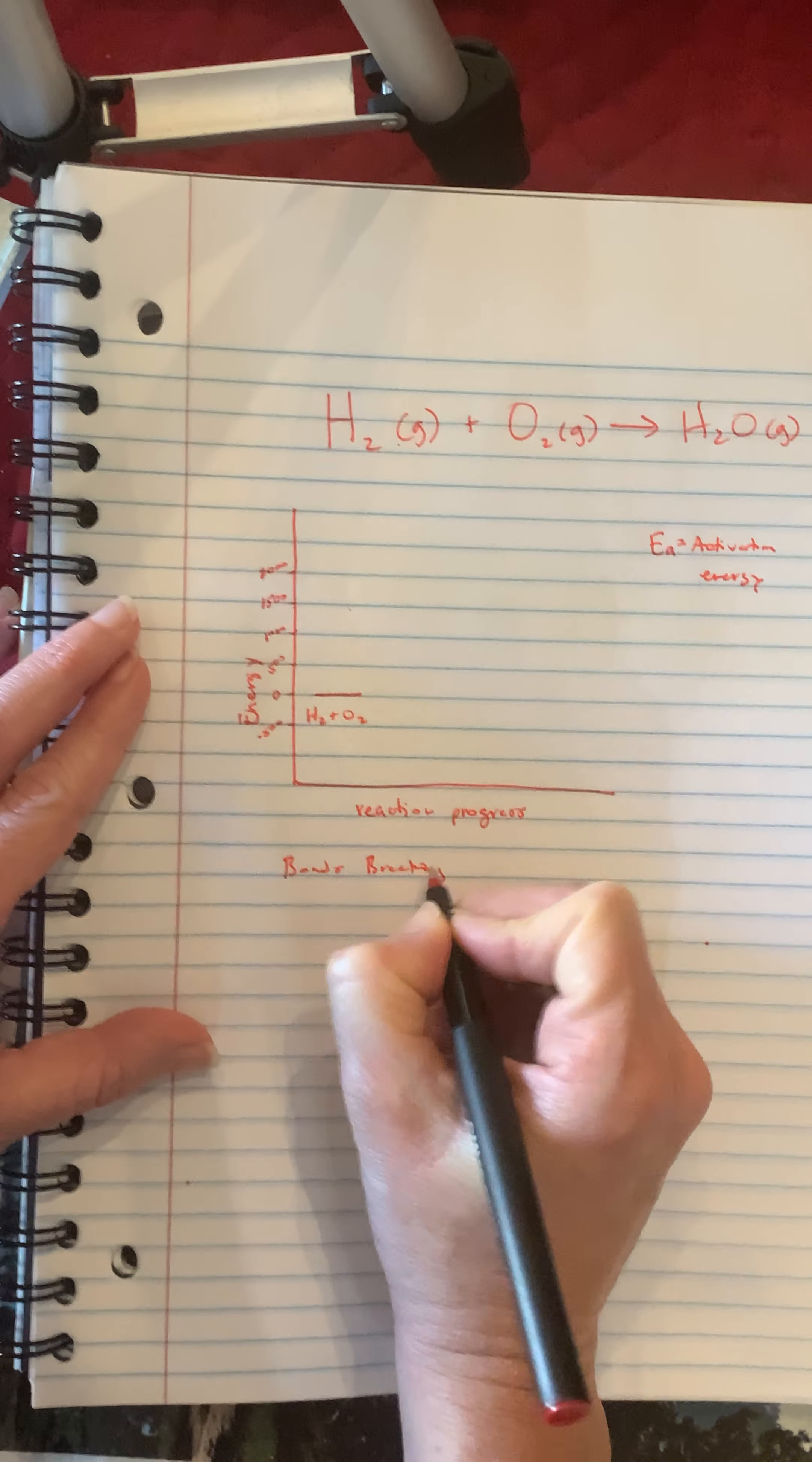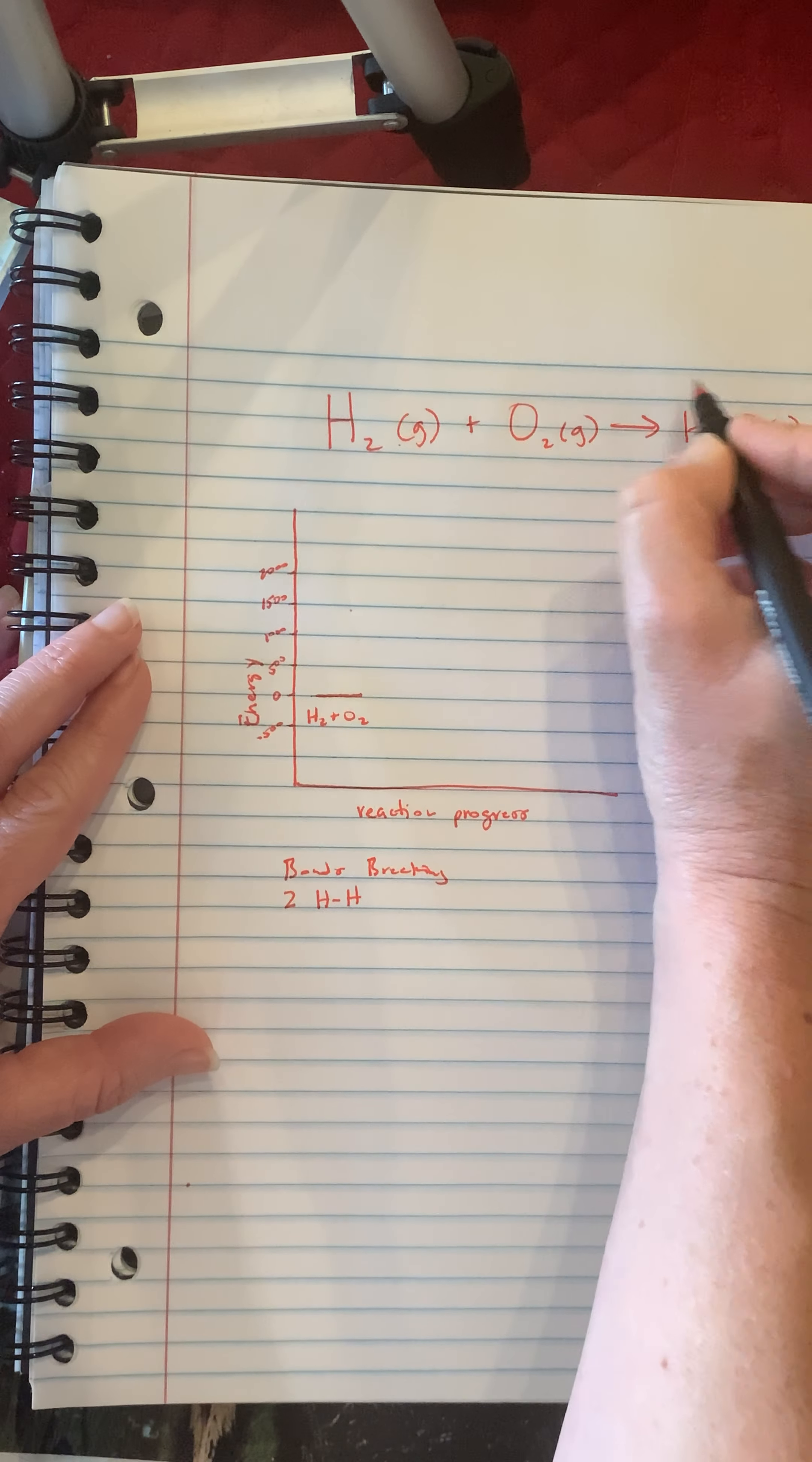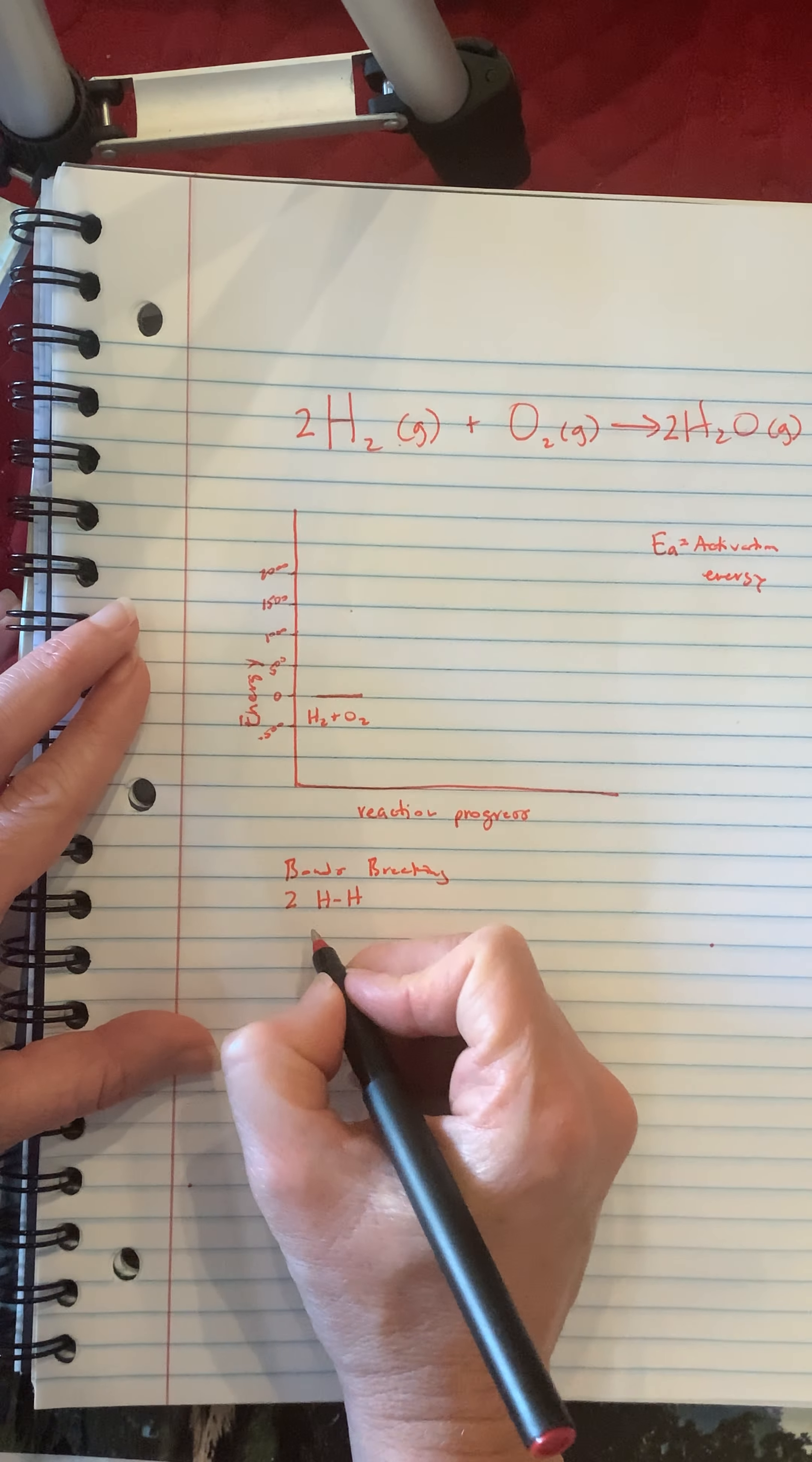So in order to form water, which is going to be our product, we have to break this hydrogen and oxygen apart. So we have H to H and there are two of them because I forgot to balance this. We need two waters to balance the oxygens out and that gives us four hydrogens so we will need two hydrogens on the left.